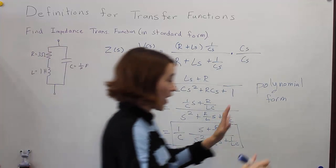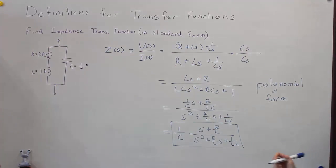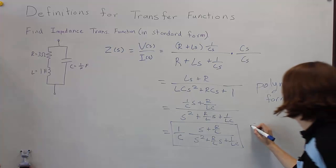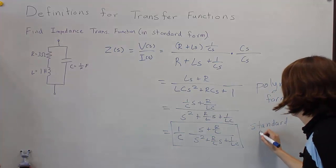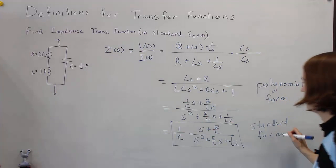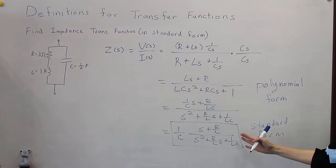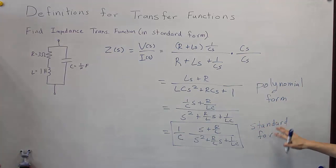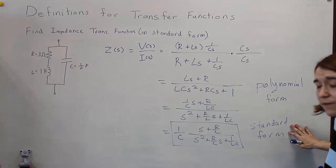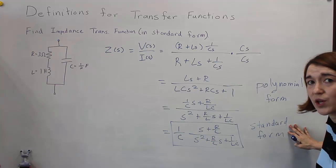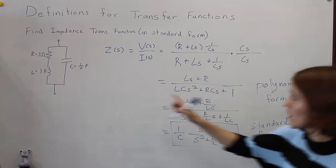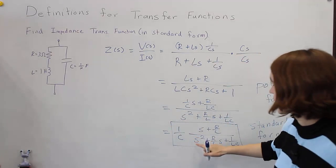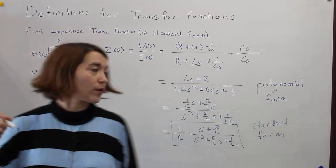So this would actually be our standard form. There's one more form that will be very useful going forward when we look at poles and zeros — and that's factored form.